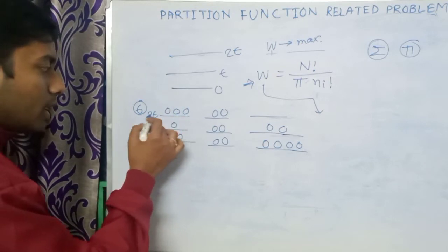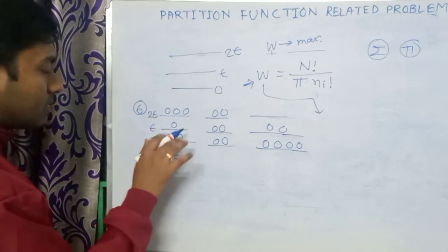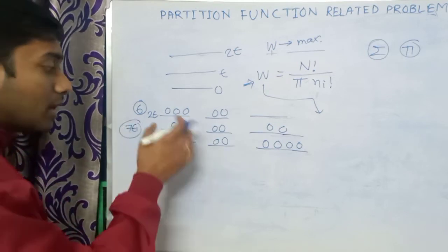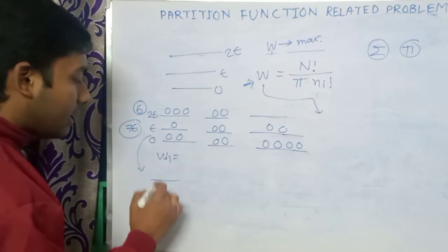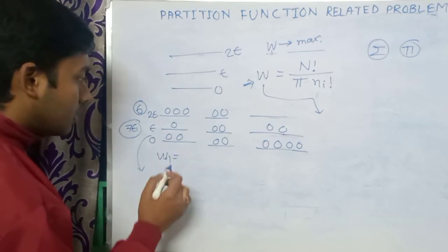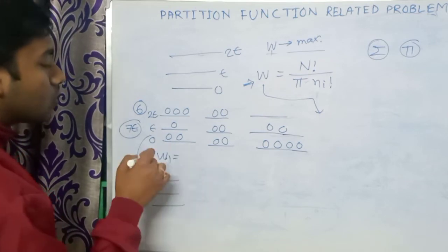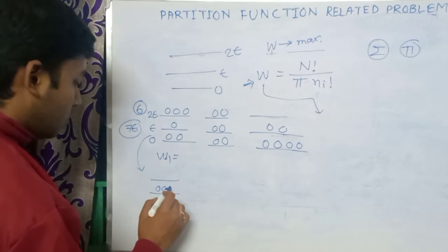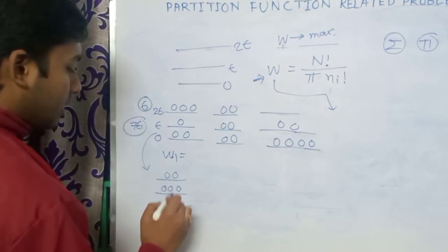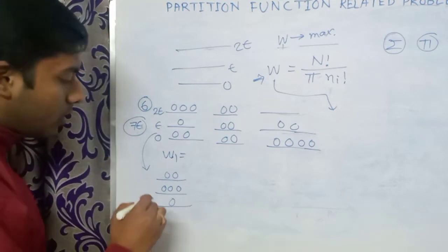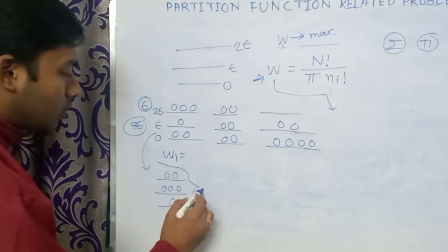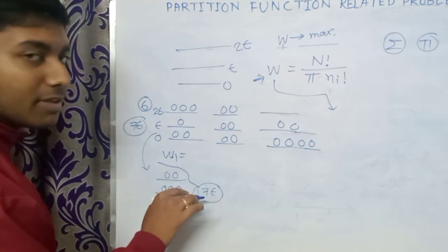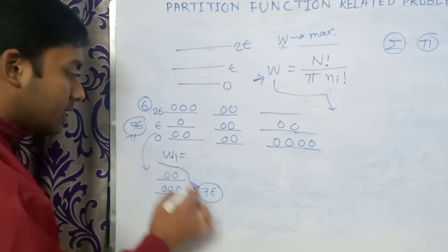Suppose the energy levels are 0, ε, and 2ε. The total energy of the system for one configuration is 2×3 = 6ε plus 1ε, giving 7ε total. I can also draw another configuration where the total energy is still 7ε — for example, three particles at 2ε and four at ε also gives seven epsilon.